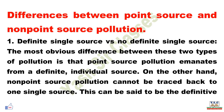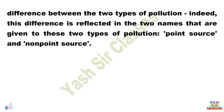Difference #1 — Definite single source vs. no definite single source. The most obvious difference between these two types of pollution is that point source pollution emanates from a single identifiable source. On the other hand, non-point source pollution cannot be traced back to one single source. This is the definitive difference between the two, and it is reflected in the names given to them: point sources and non-point sources.